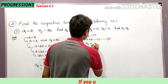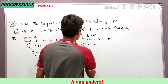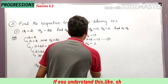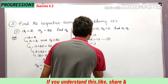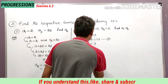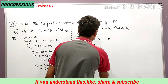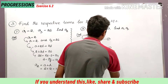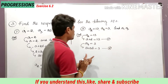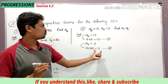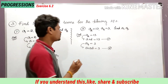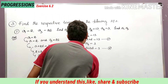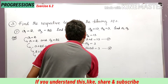a4 is equal to 3, so a4 can be written as a plus 3d is equal to 3. Let this be equation number 2. Now subtracting equation 1 from equation 2.